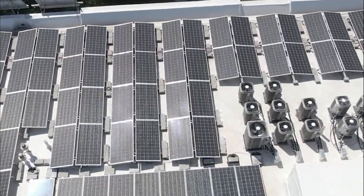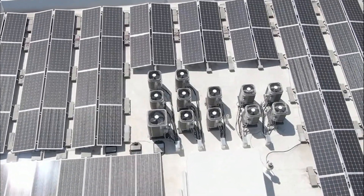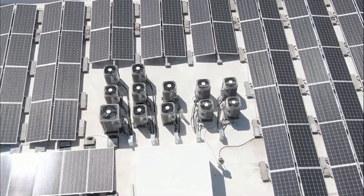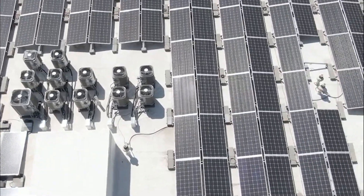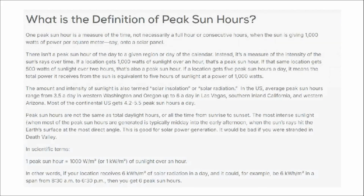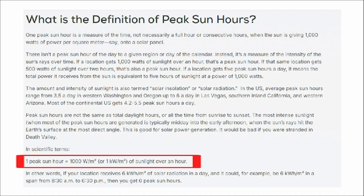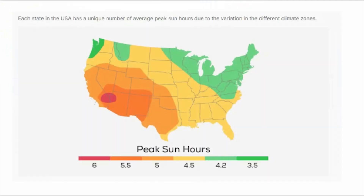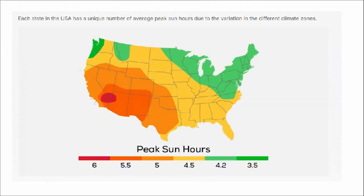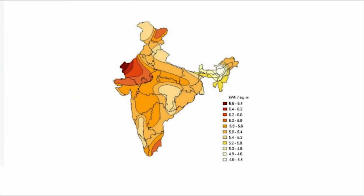A big factor in determining how many solar panels you need to power your home is the amount of sunlight you get, known as peak sun hours. A peak sun hour is when the sun's intensity is an average of 1,000 watts of photovoltaic power per square meter. In the US, the average peak sun hours range from over 5.75 hours per day, whereas in India, the average peak sun hours range from 3 to 5 hours per day.